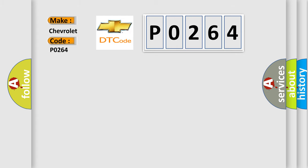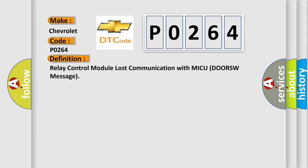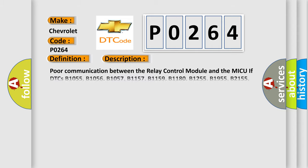The basic definition is: Relay control module lost communication with MICUDORSW message. This is a short description of this DTC code: poor communication between the relay control module and the MICUDORSW if DTCs B1055, B1056, B1057, B1157, B1159, B1180, B1255, B1955, B2155, B2156, and B2161 are indicated.